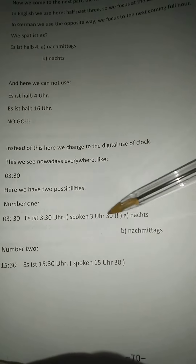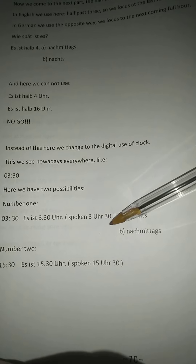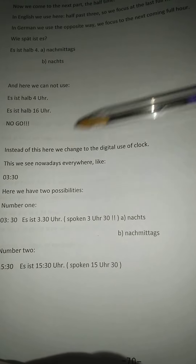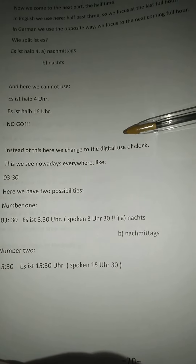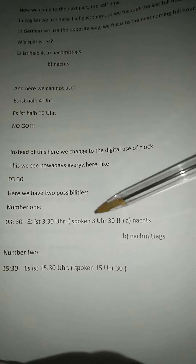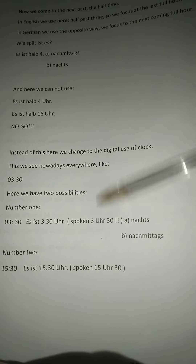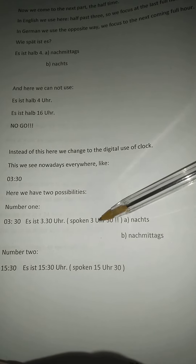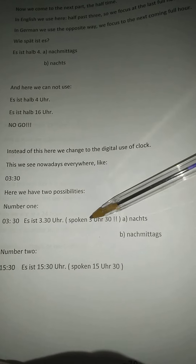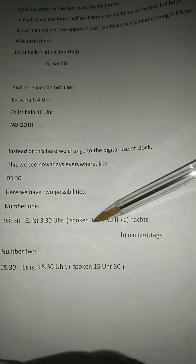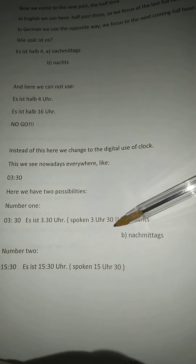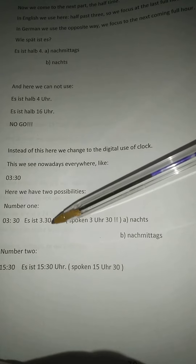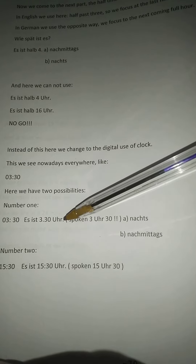This is a little bit like a price: 3 Euro 30, 3 Dollar 30. So instead of dollar or a currency, now we take 'Uhr.' Also spoken: 3 Uhr 30. Written: 3.30 Uhr.